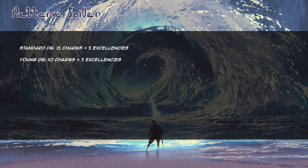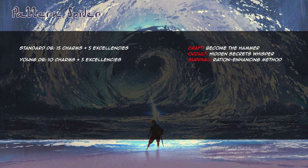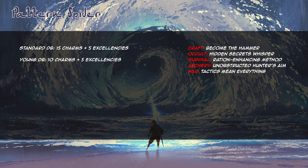I've already established with Torkova that I'm interested in martial arts, occult, and survival, so I'll favor charms from those abilities first. Just like when selecting attributes, I find it helpful to categorize charm selections by primary, secondary, and tertiary ability choices. We don't have a supernal ability like Solars do, but we have an idea of which abilities we'll want to rank highest. A standard Dragon-Blood has 15 charms and 5 excellences; a young Dragon-Blood has 10 charms and 5 excellences. I'm going to start selecting the excellences: Become the Hammer adds dice to brawl and martial arts; Hidden Secrets Whisper adds dice to occult; Ration-Enhancing Method adds dice to survival. With excellences for our main three traits, we move to secondary: Unobstructed Hunter's Aim adds dice to archery, and Tactics Mean Everything adds dice to war.